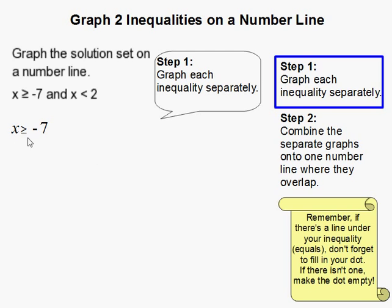I'm going to go ahead and graph x is greater than or equal to negative 7. Here's my number line right here. Notice I have this big dot - it's pretty thick and filled in.